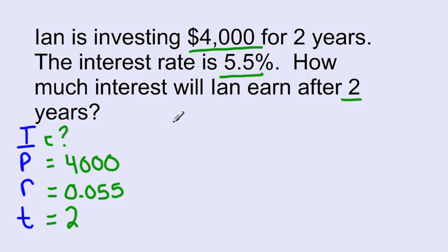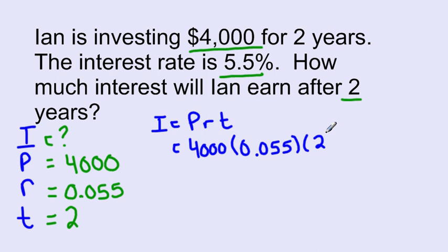We're going to plug that into our formula. Our first step is always to write out the formula. I equals PRT. Our principal is 4,000. Our rate is 0.055. And our time is 2.